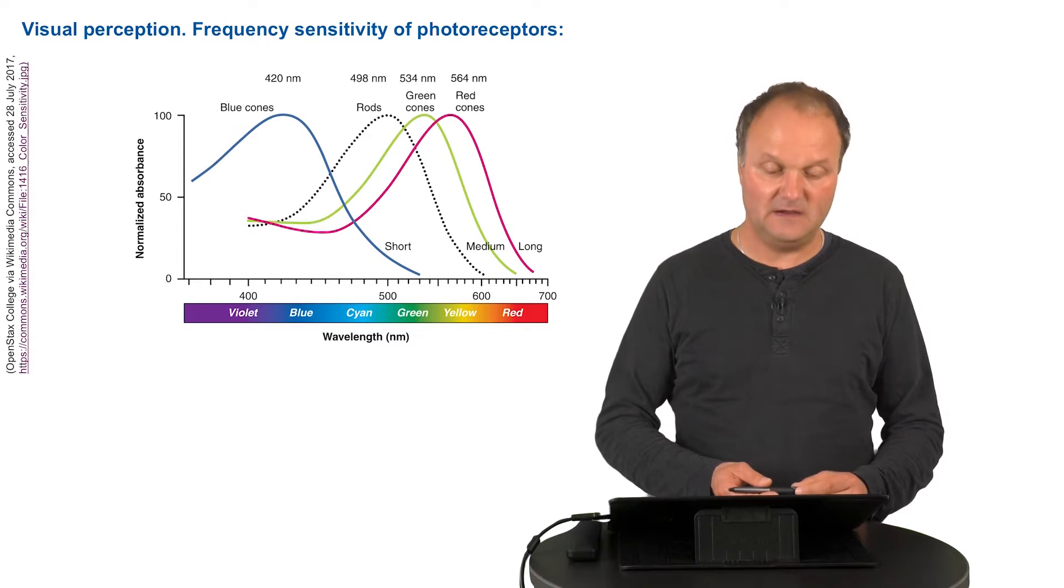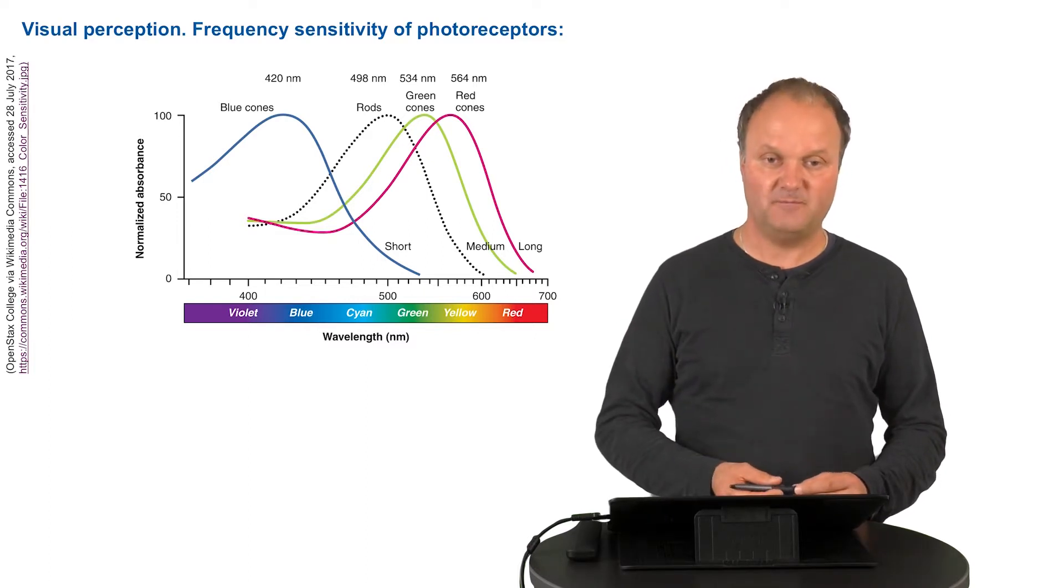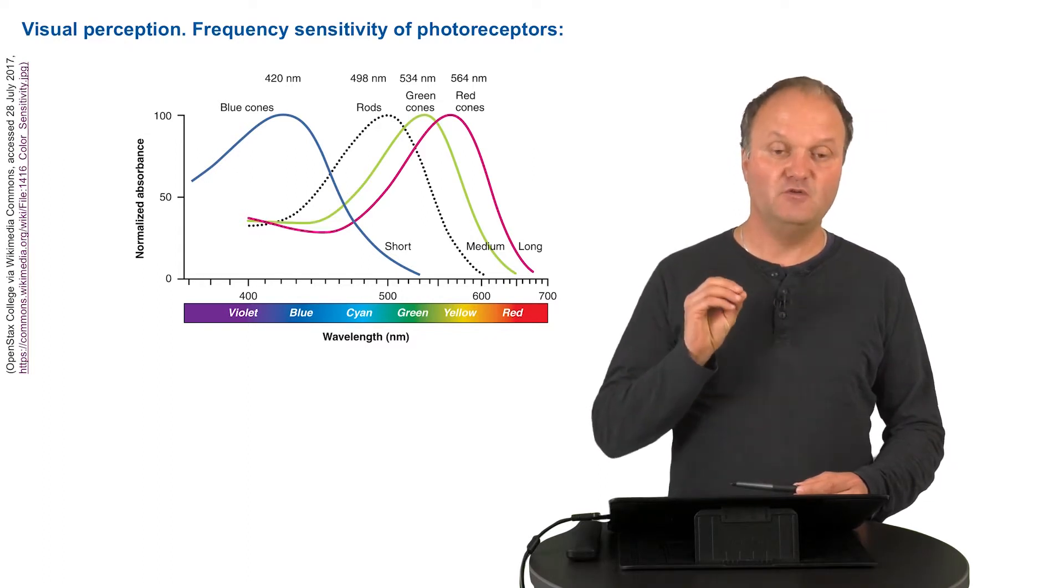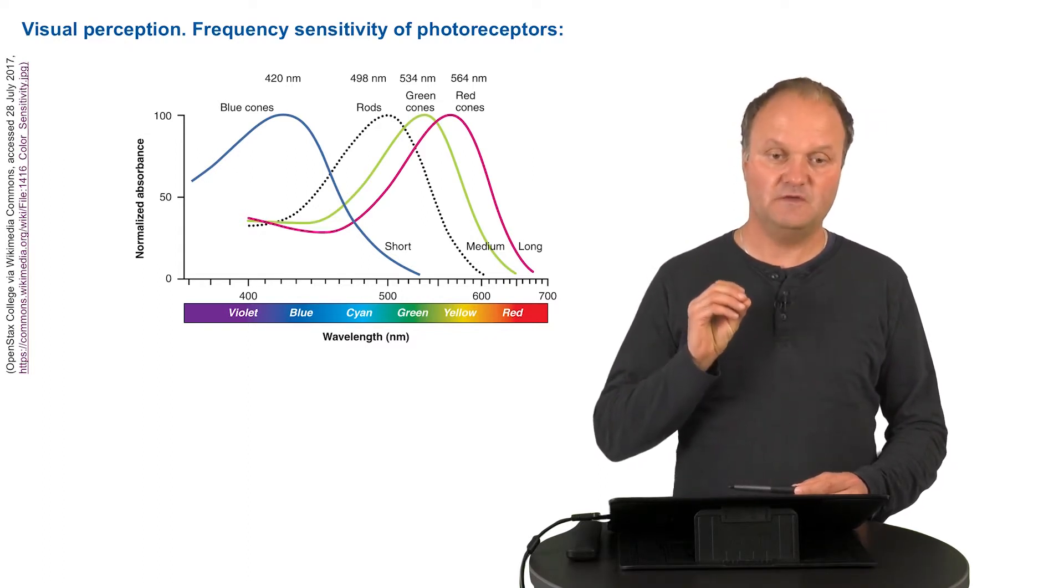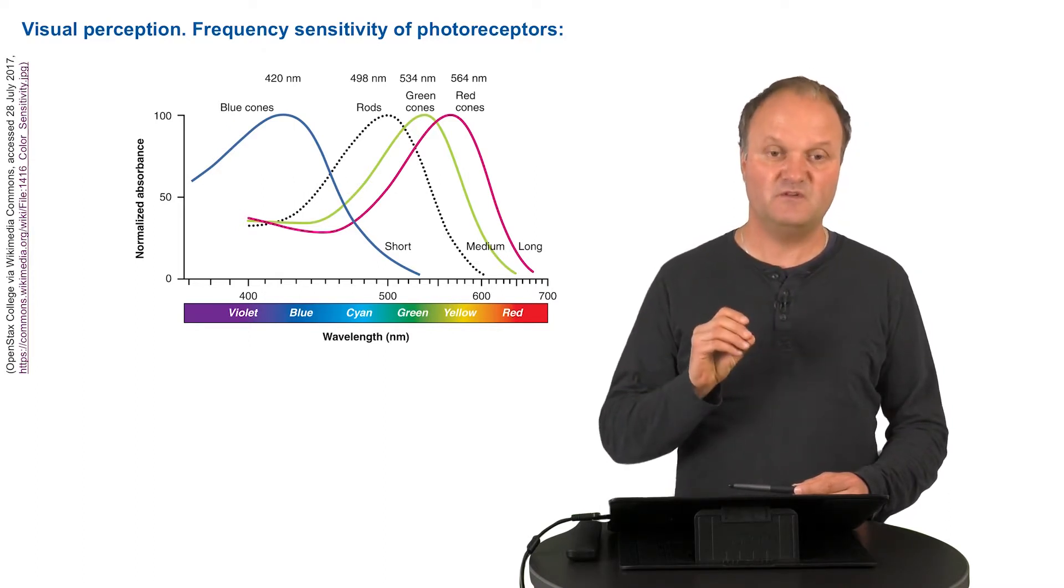Now, as we have only three types of receptors, we only need stimulation in three light areas in order to stimulate each of those receptor types in a particular way, in order to produce all colors of the visual spectrum. And that is why, for example, your TV screen will only produce three types of light, because it is enough to stimulate these three receptors with three types of light.